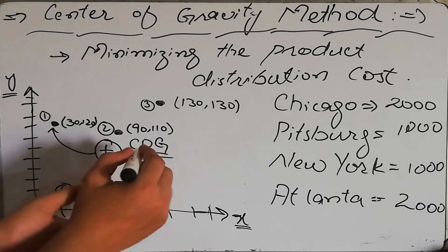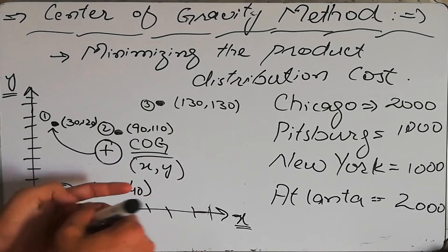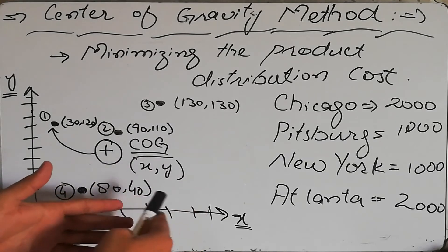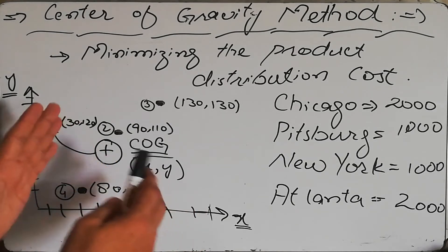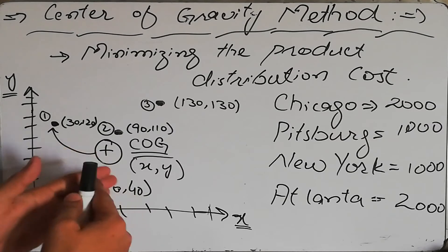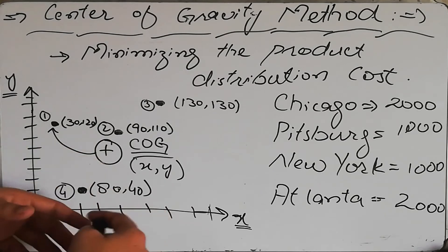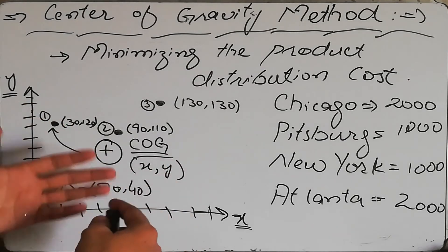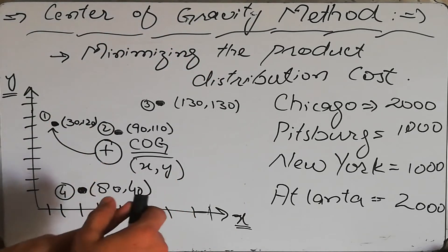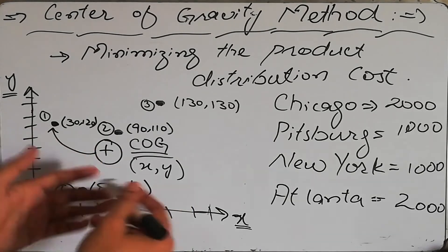The final center of gravity location will have coordinates x and y. The purpose of the Center of Gravity method is to find these coordinates — the x coordinate and y coordinate — of the center of gravity, which is the optimal location to install our industry or company so that the transportation cost to different markets is minimum. Now let's see how to calculate these x and y coordinates.